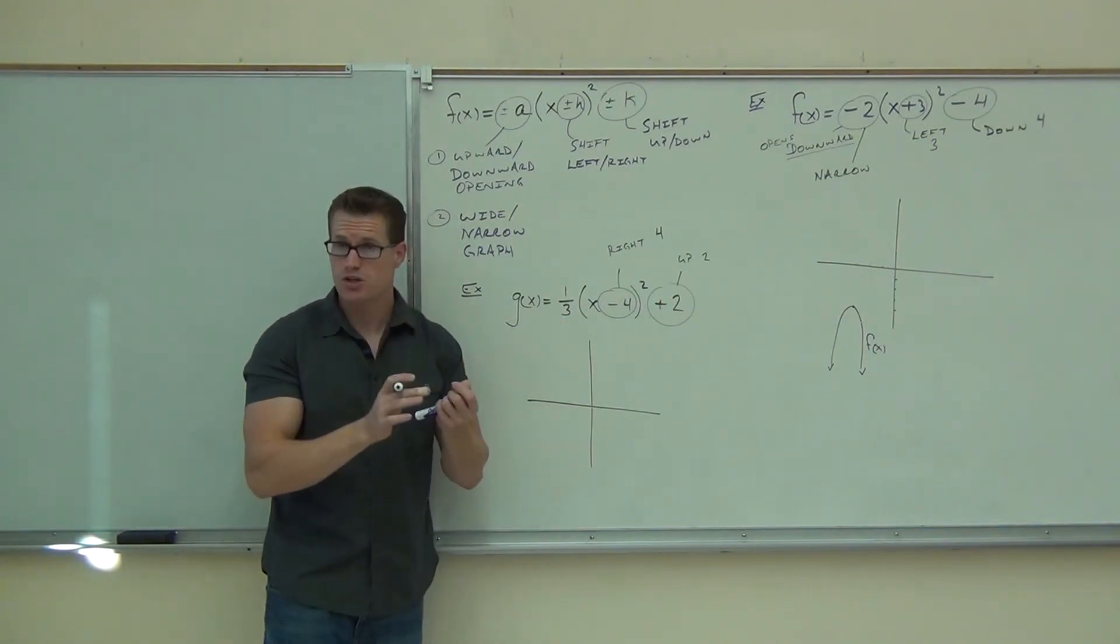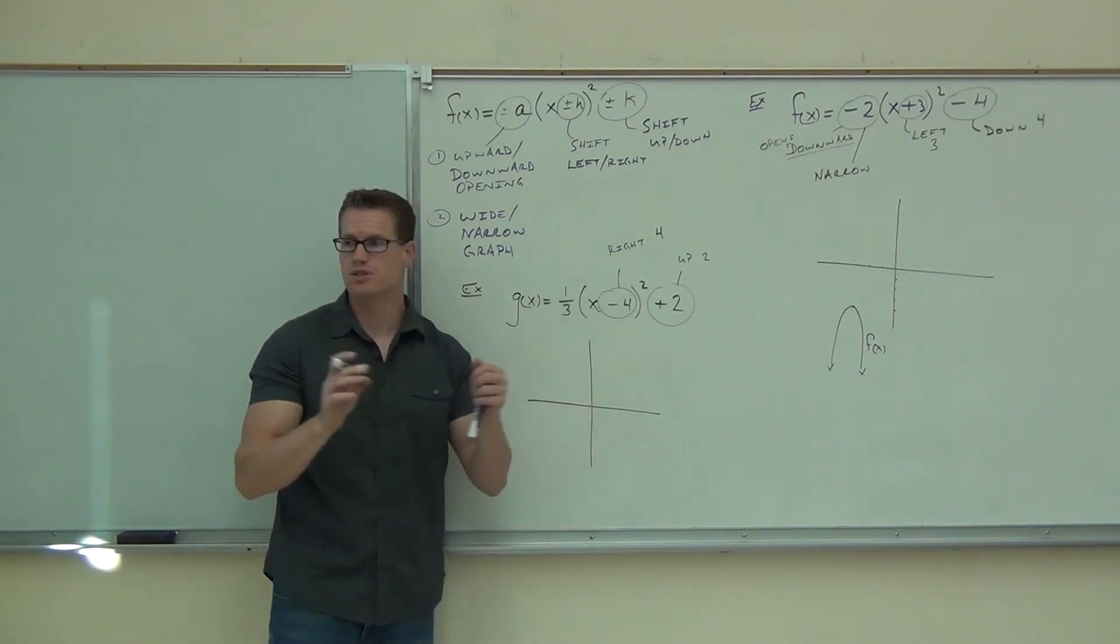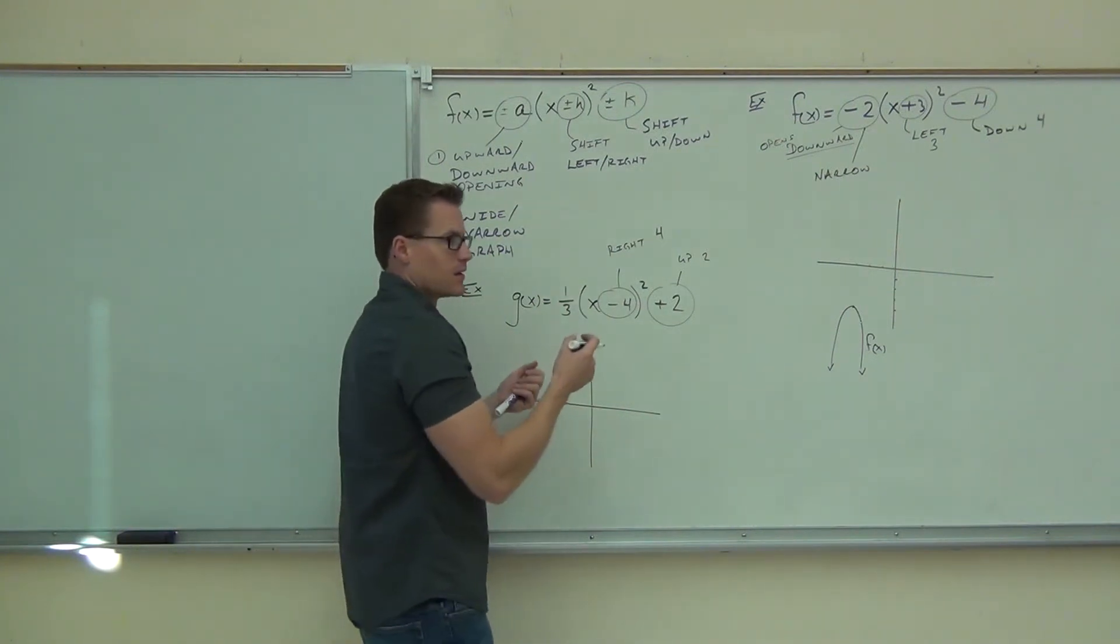So don't just assume because it's a fraction, it has to be wider. It's got to be a fraction less than one. Again, if I gave you 7 thirds, that would actually make it narrower. That's like 2 and a third.